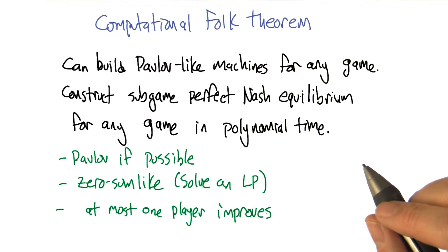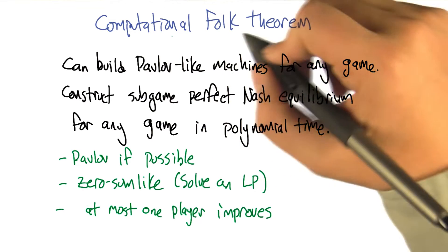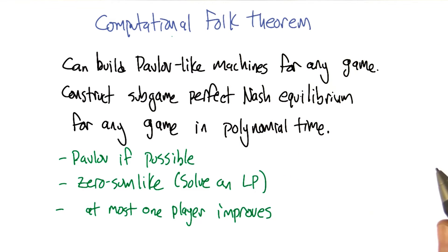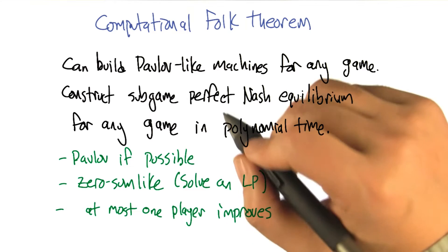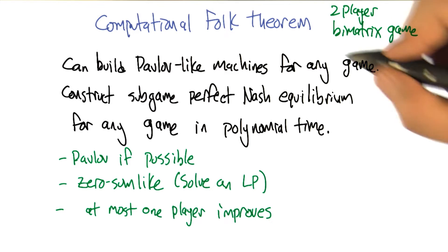So this Pavlov idea is actually more general than just the Prisoner's Dilemma or iterated Prisoner's Dilemma. In fact, it led to a result called the Computational Folk Theorem. The idea of the Computational Folk Theorem says that you give me any two-player bi-matrix game.